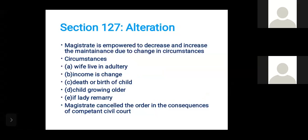Section 127 deals with alteration of maintenance. A magistrate is empowered to decrease or increase the maintenance amount due to change in circumstances. The circumstances that can trigger alteration include: if the wife starts living in adultery, change in income, death or birth of a child, child growing older, or if the lady remarries — in which case the magistrate may cancel the order.